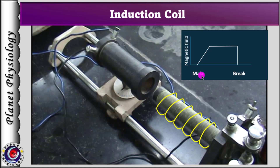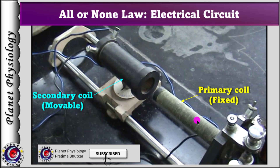When we release the tap key, current flow in the primary coil stops and the magnetic field is lost. At this point, again the current is induced in the secondary coil and a stimulus is delivered to the tissue. This stimulus is called the brake shock. The strength of the induced current depends on the distance and the angle between the primary and secondary coil. Lesser the distance, stronger is the stimulus.